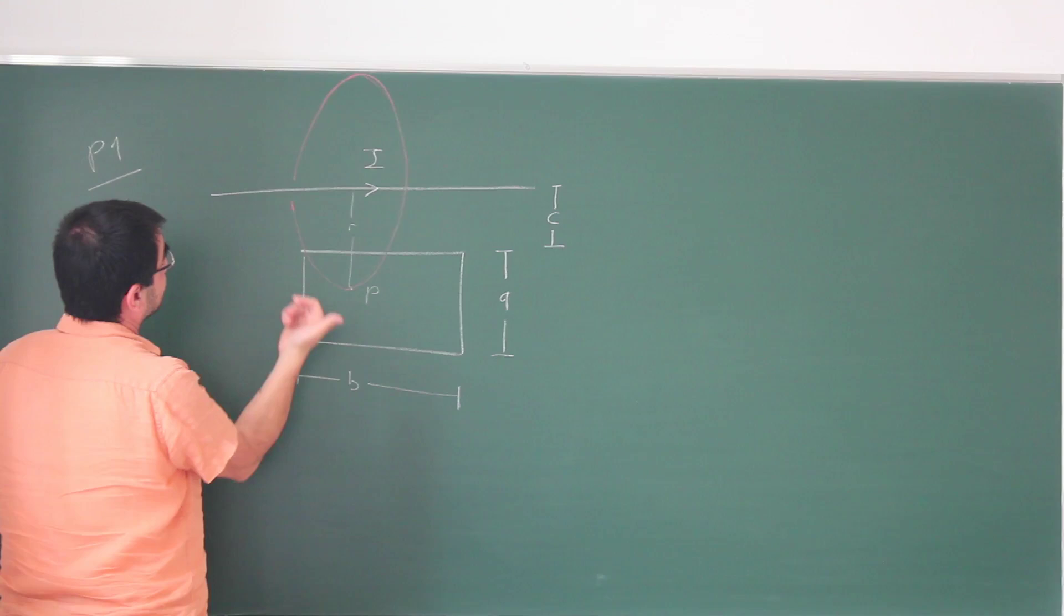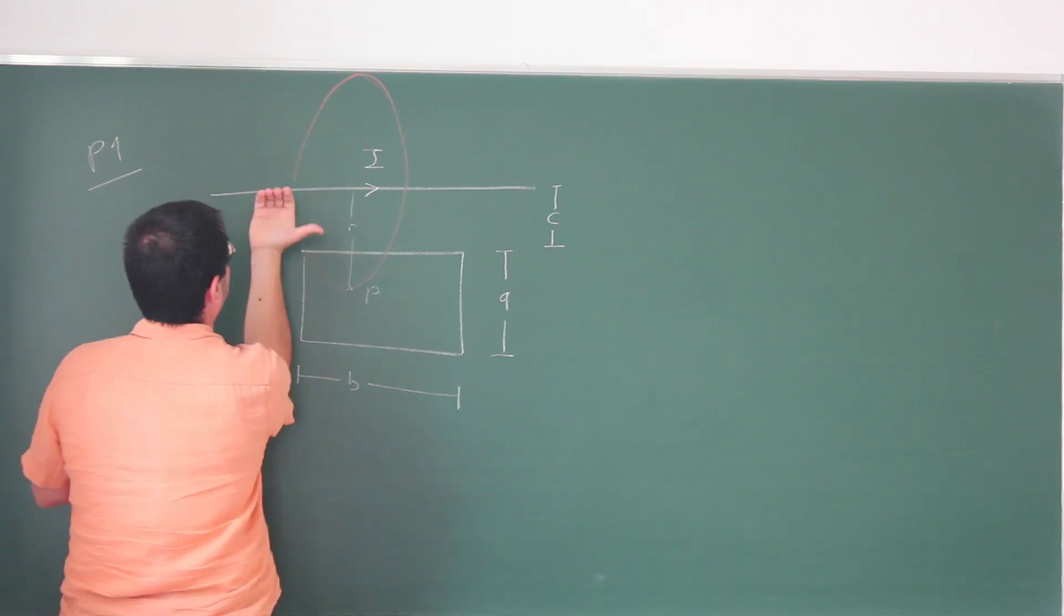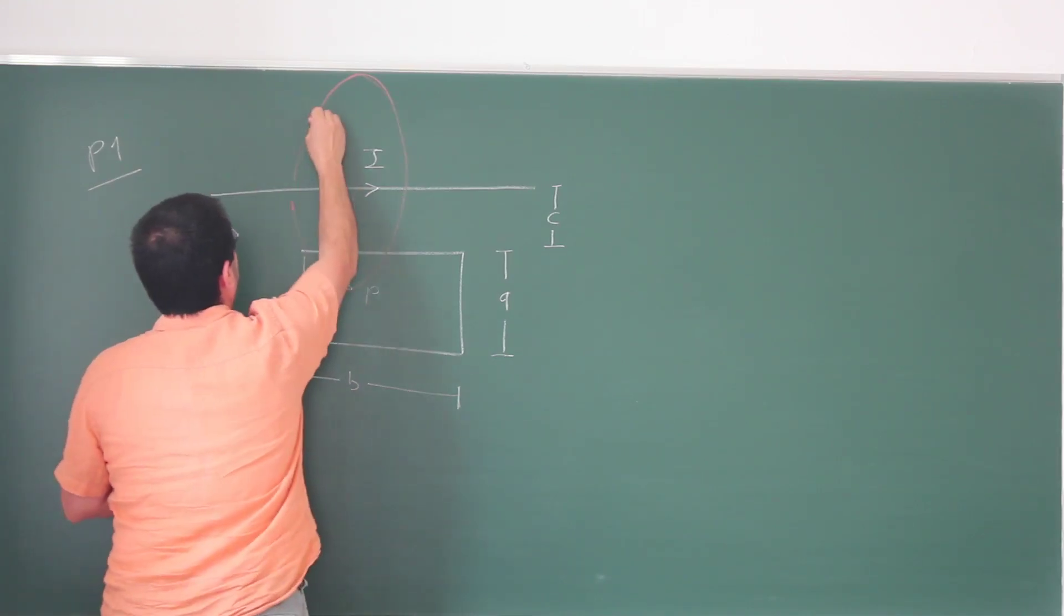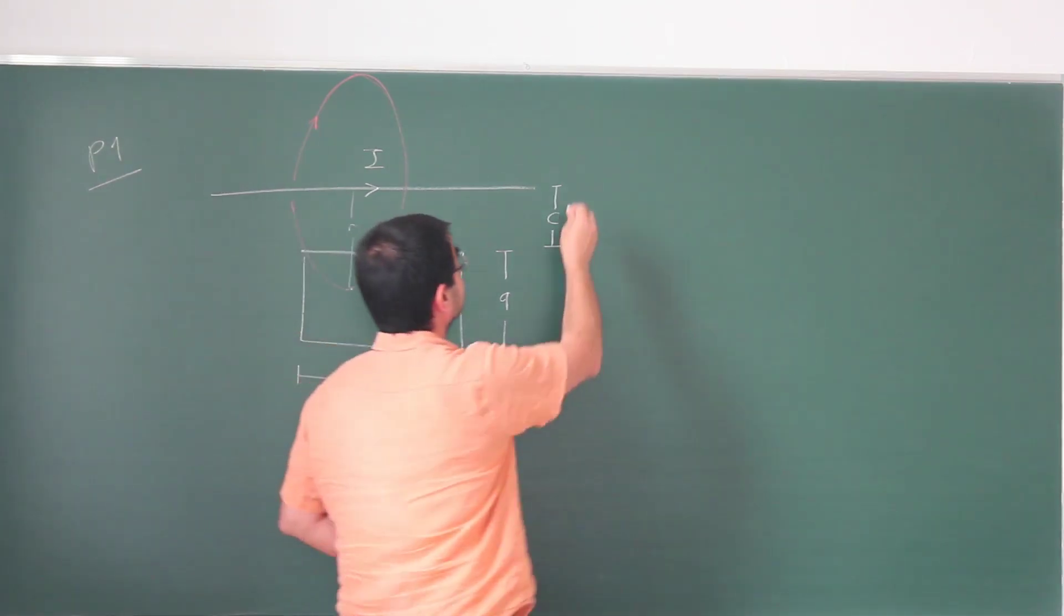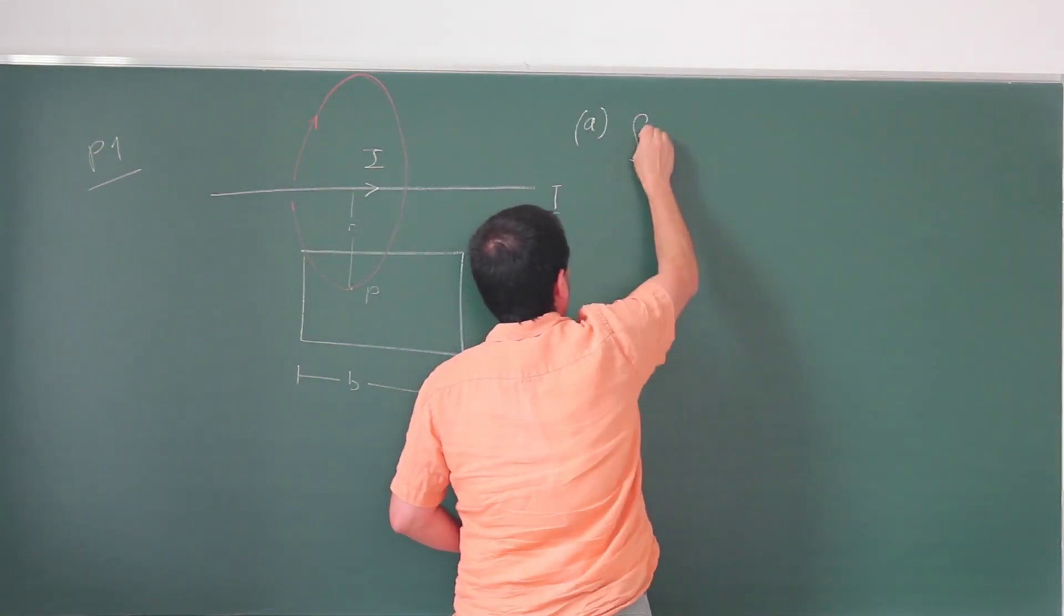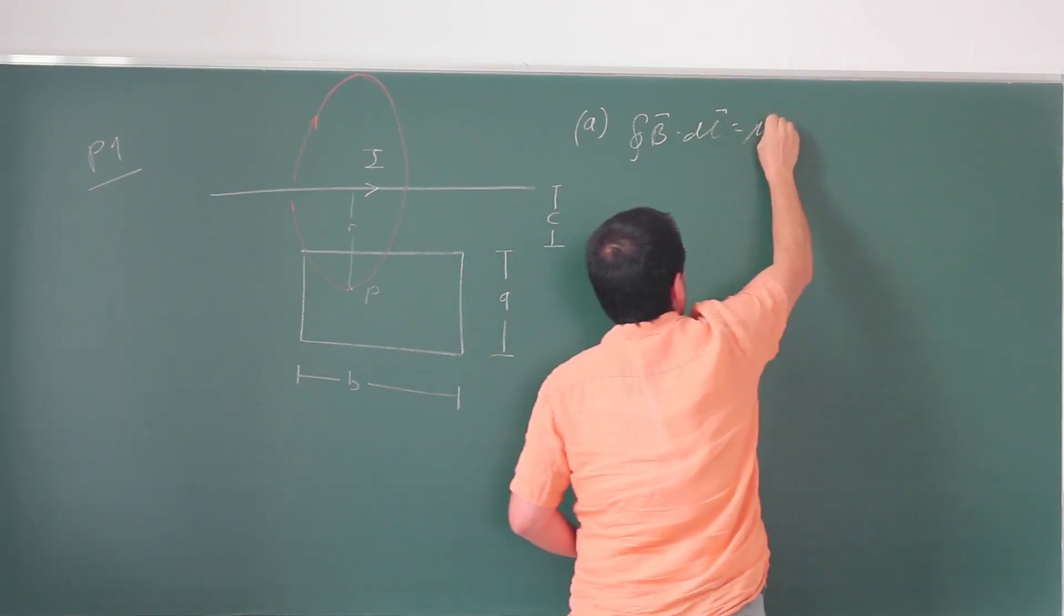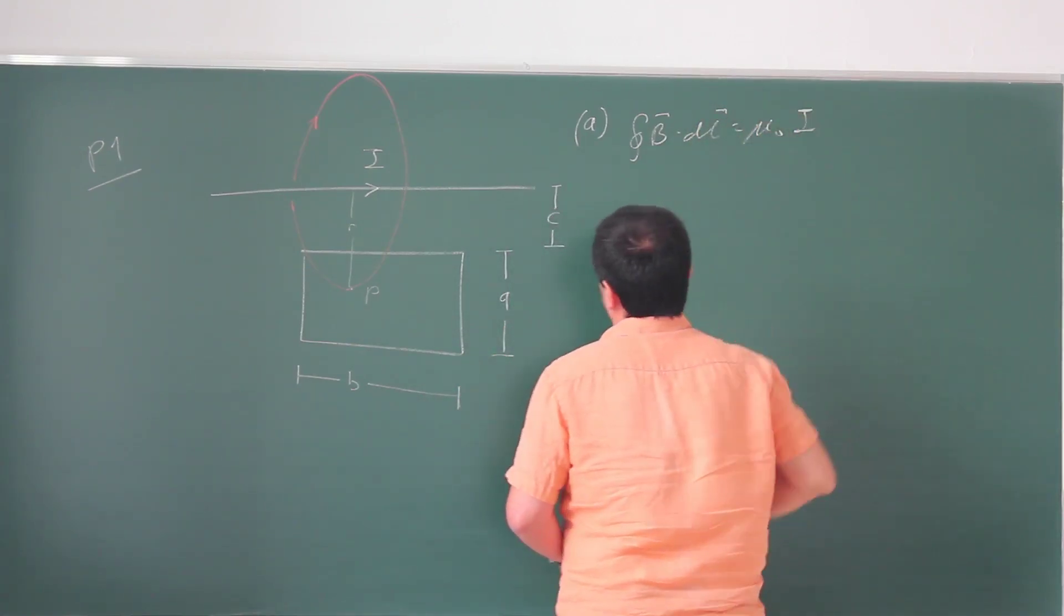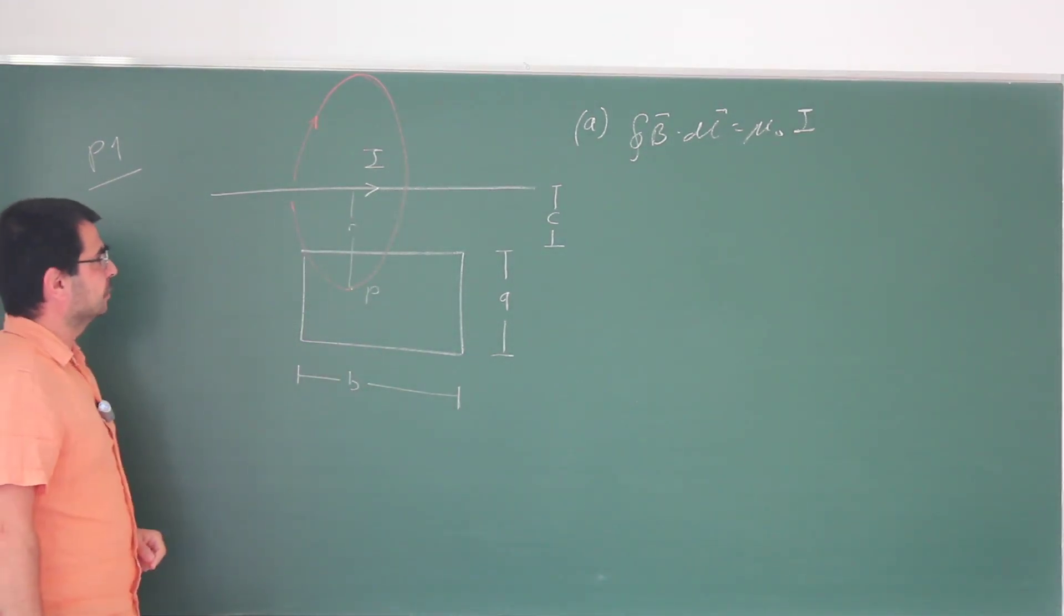I'm going to choose the orientation of the circle in such a way that the contribution of the current is going to be positive, so that requires going this way. So this is the orientation of my loop and if I write down Ampere's law, so this is for part A, integral of B dot dL is mu naught times the current.